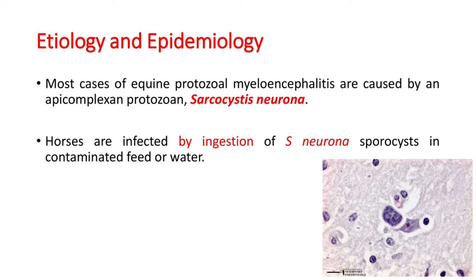Coming to the etiology and epidemiology: most cases of EPM are caused by an apicomplexan protozoan called Sarcocystis neurona. Horses are infected by ingestion of Sarcocystis neurona sporocysts in contaminated feed or water.